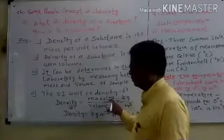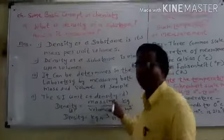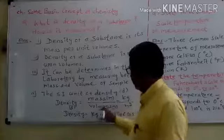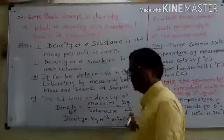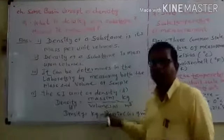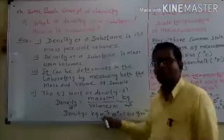Mass is M, volume is V. The unit of density is kilograms per cubic meter or grams per cubic centimeter. Density equals mass over volume, so the unit is kg/m³ or g/cm³.